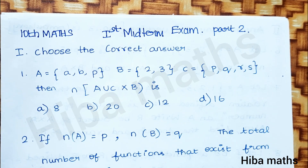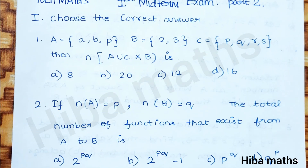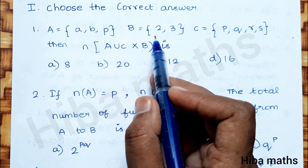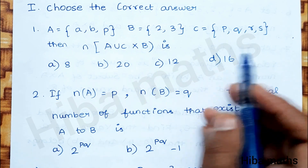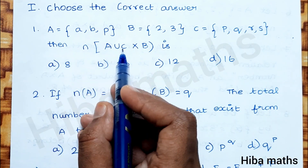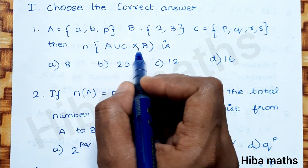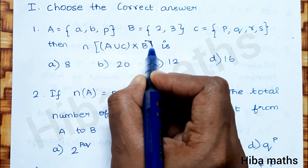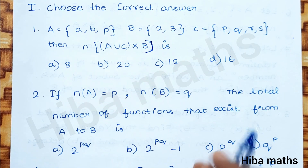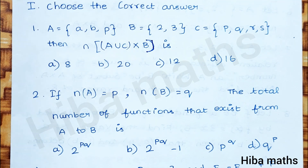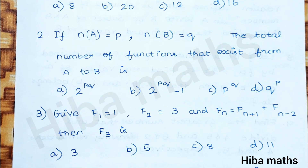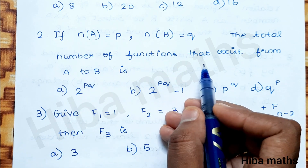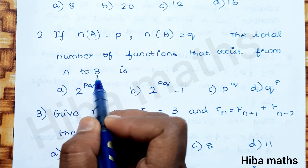Now, what is the question paper? Choose the correct answer. First question: A = {a, b, p}, B = {2, 3}, C = {p, q, r, s}. Then find n of A union C cross B. There are two operations: A union B, and B cross B. The answer is the number of terms. If n of A = p and n of B = q, find the total number of functions that exist from A to B.